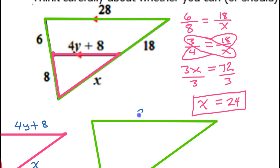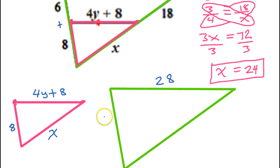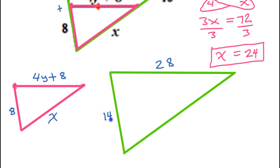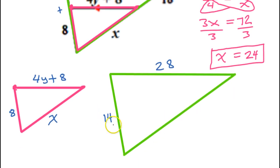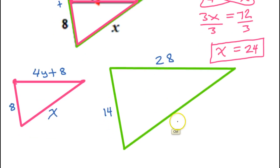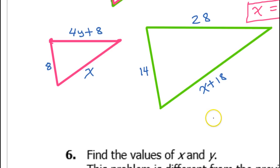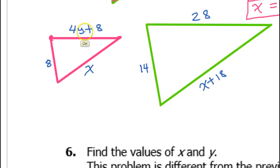The big triangle has 28 on top. The left side is 6 plus 8, which is 14. The right side is x plus 18, which I'll just write as x plus 18. We will use what we know about similar triangles in order to solve for y.